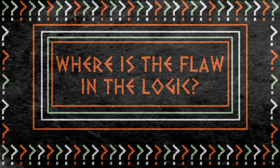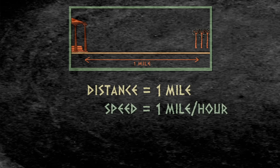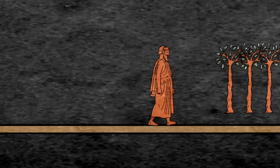To resolve the paradox, it helps to turn the story into a math problem. Let's suppose that Zeno's house is one mile from the park and that Zeno walks at one mile per hour. Common sense tells us that the time for the journey should be one hour.